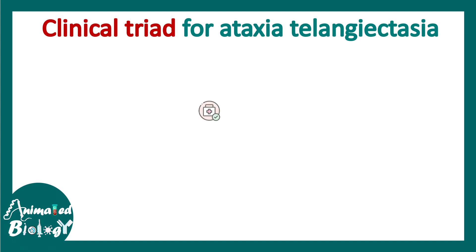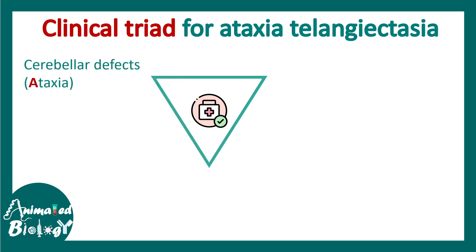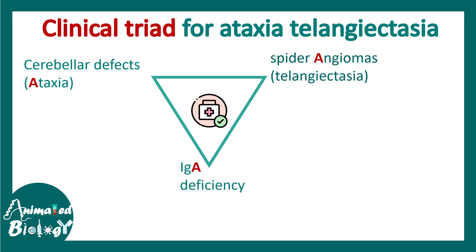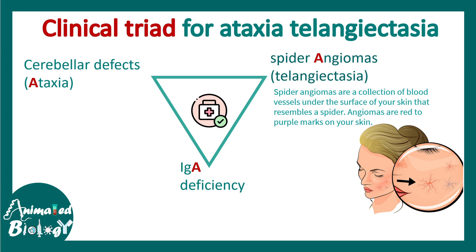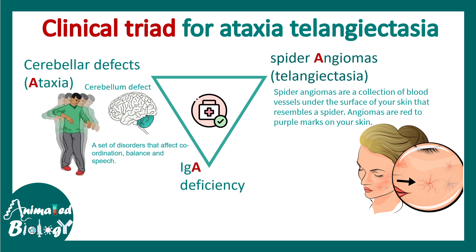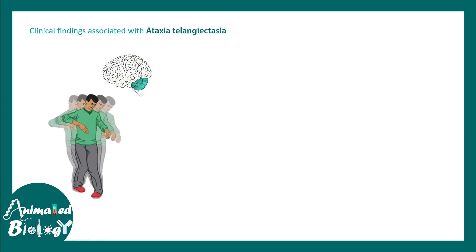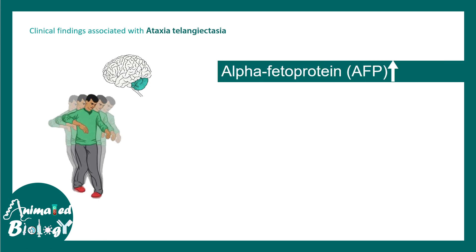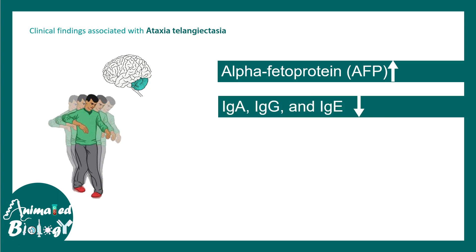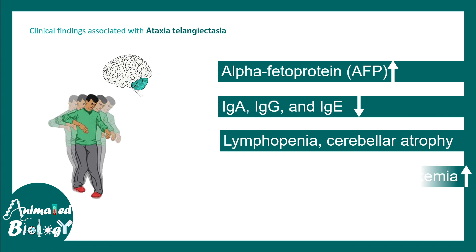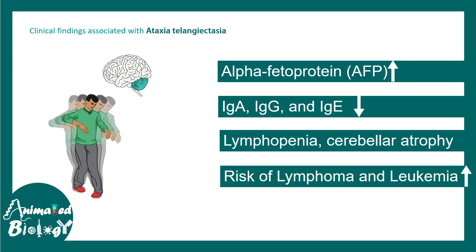There is a clinical triad for ataxia telangiectasia known as the three A's. First, there is cerebellar ataxia — a defect causing problems with balance, motor coordination, and speech. Second, there are spider angiomas — spider-like skin patterns appearing red or purplish under the skin. Third, there is IgA deficiency, which increases susceptibility to bacterial infections. Clinical findings include increased alpha-fetoprotein, decreased IgA, IgG, and IgE levels, lymphopenia, cerebellar atrophy, and an increased risk of lymphoma and leukemia.